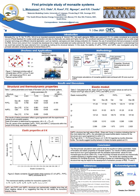Monazite is an important mineral in the mining industry and it contains non-trivial amounts of rare elements, thorium and uranium. It has an interesting and complex structure due to its chemical formula, which suggests that it can exist in a phosphate or a silicate form.